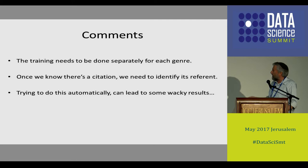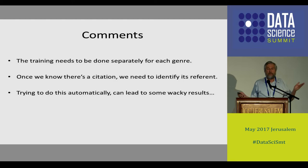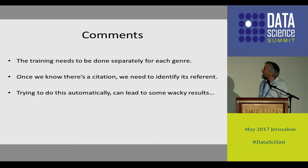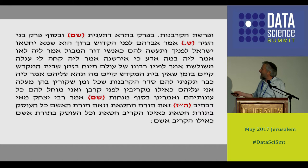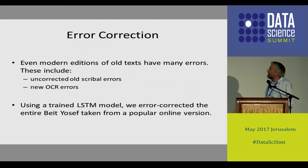Just for fun, every genre is different, so you can't always use one book's training for a completely different genre. We also trained the LSTM not just to put an asterisk where it thought there was a reference, but to actually write text there based on references it had seen. What's wacky is it just makes up these phony baloney references — bogus references that look great. Someone looking at this text might actually be fooled. But we need a completely different algorithm to actually solve the problem of finding the real source.